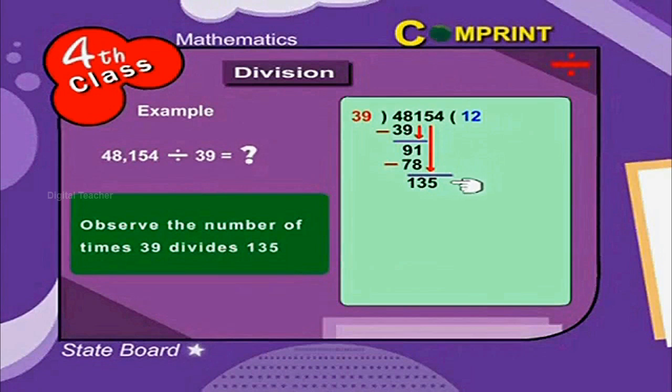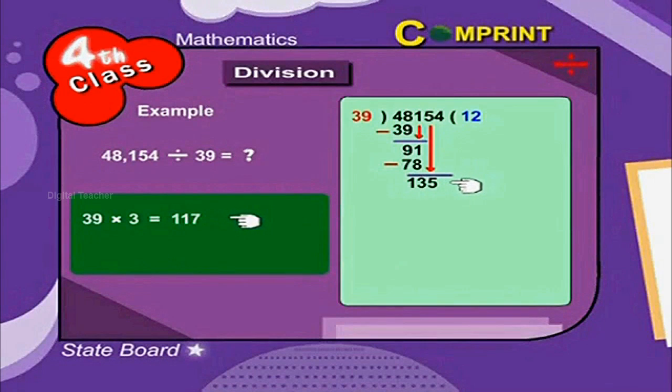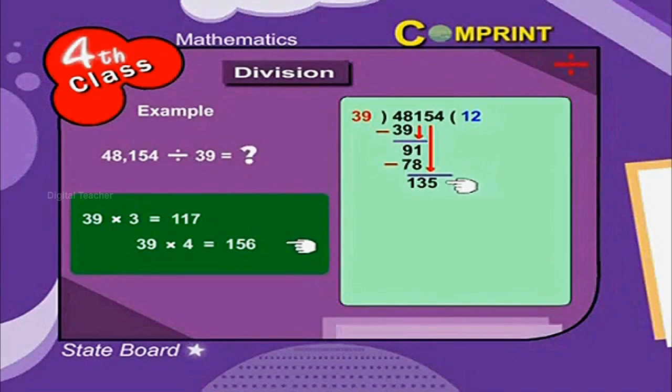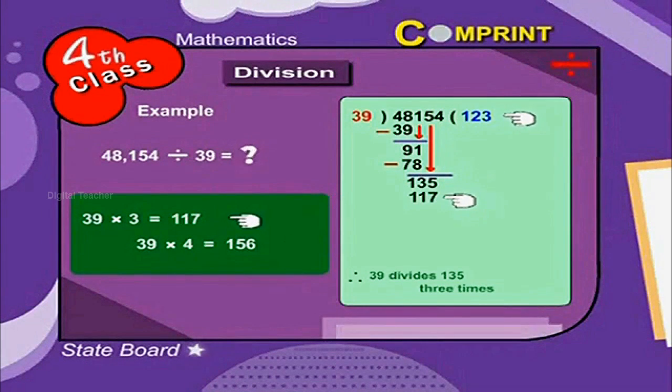Observe the number of times 39 divides 135. 39 into 3 is equal to 117, 39 into 4 is equal to 156. Therefore, 39 divides 135 three times.